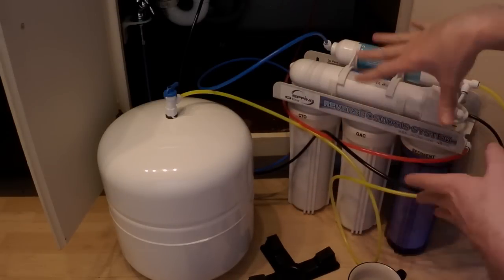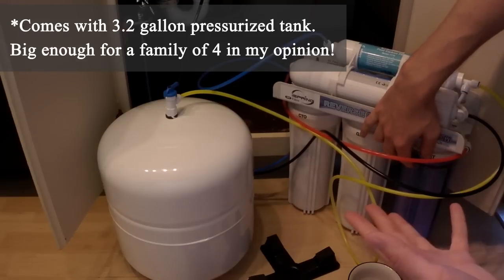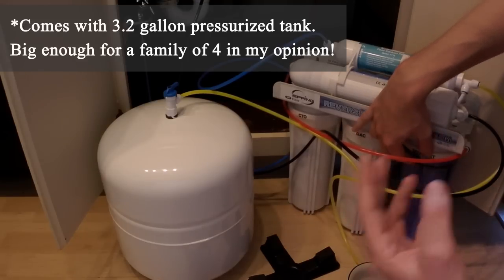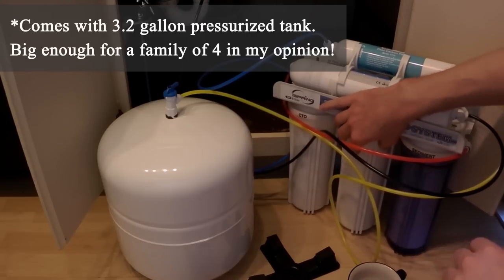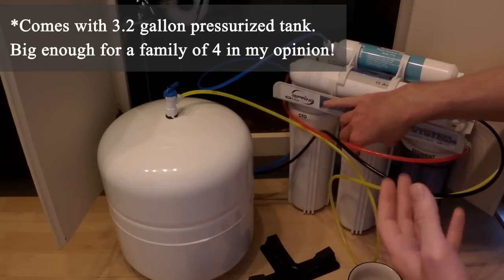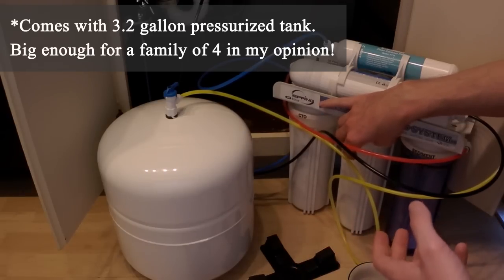Now I'll get into the filter itself. The first one is the sediment filter. It removes items at five microns. It basically takes out your bigger particles. The second stage right here is the granular carbon, which gets rid of unpleasant tastes, chlorine, odors, cloudiness, and colors that are in the water.